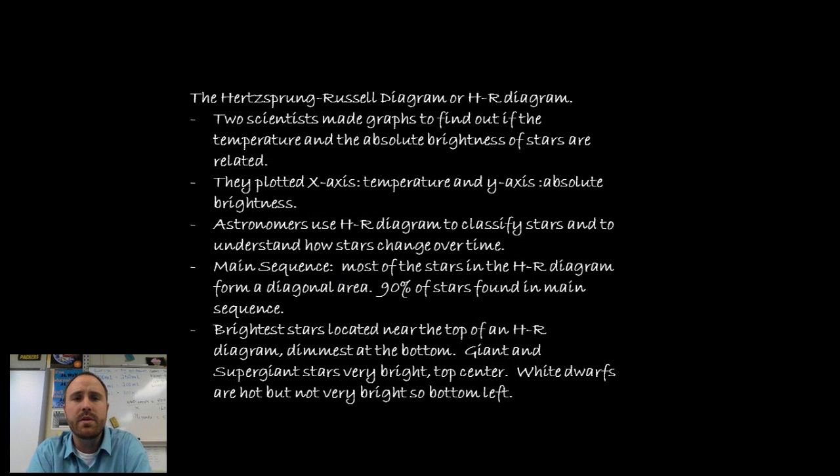In the lab, you did a lab where you were plotting different stars' locations based on their temperature and also their brightness. And what you were really doing is the work that was started by two scientists, Hertzsprung and Russell, and they came up with a diagram that's oftentimes referred to as the HR diagram. They were basically plotting, just like you had done, the temperature and the absolute brightness and how they related.